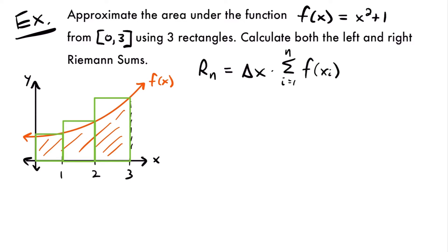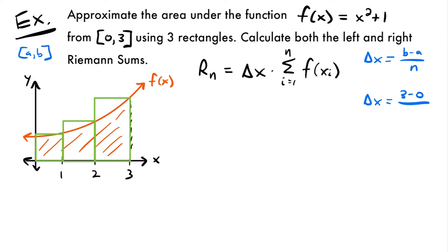To calculate this area we need to find the width and height of our rectangles. They all have the same width, delta x, which equals b minus a divided by n. Our interval is from 0 to 3, so a equals 0 and b equals 3. Delta x equals 3 minus 0 divided by 3, which equals 1. Since delta x equals 1, we don't need to multiply by it, because anything times 1 is itself.